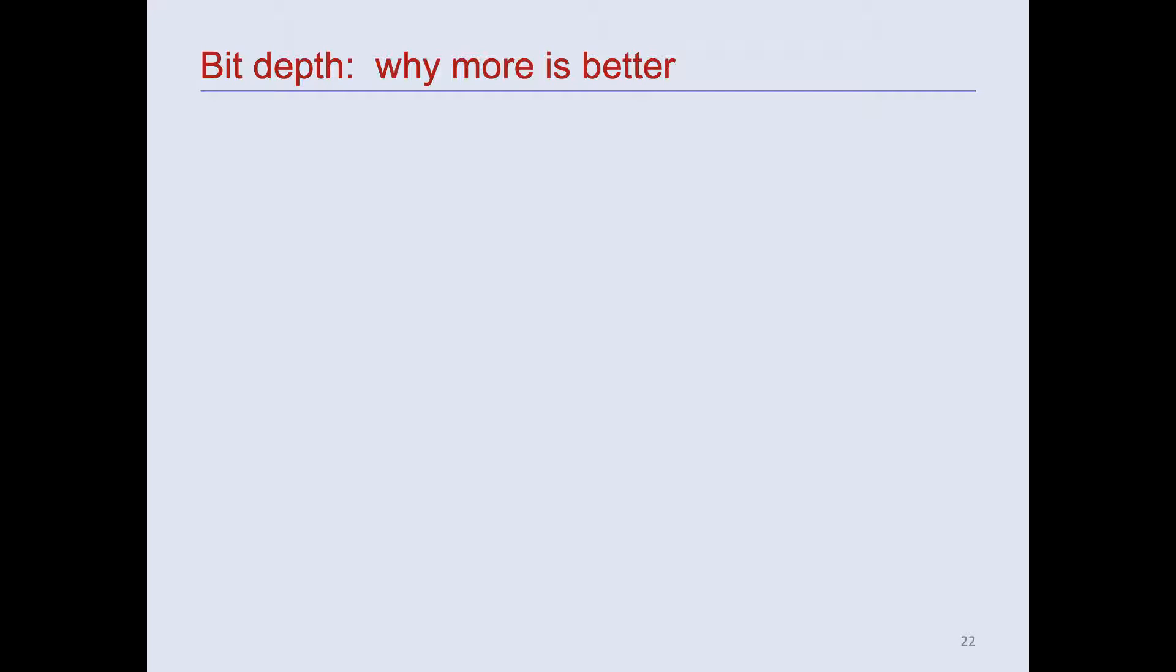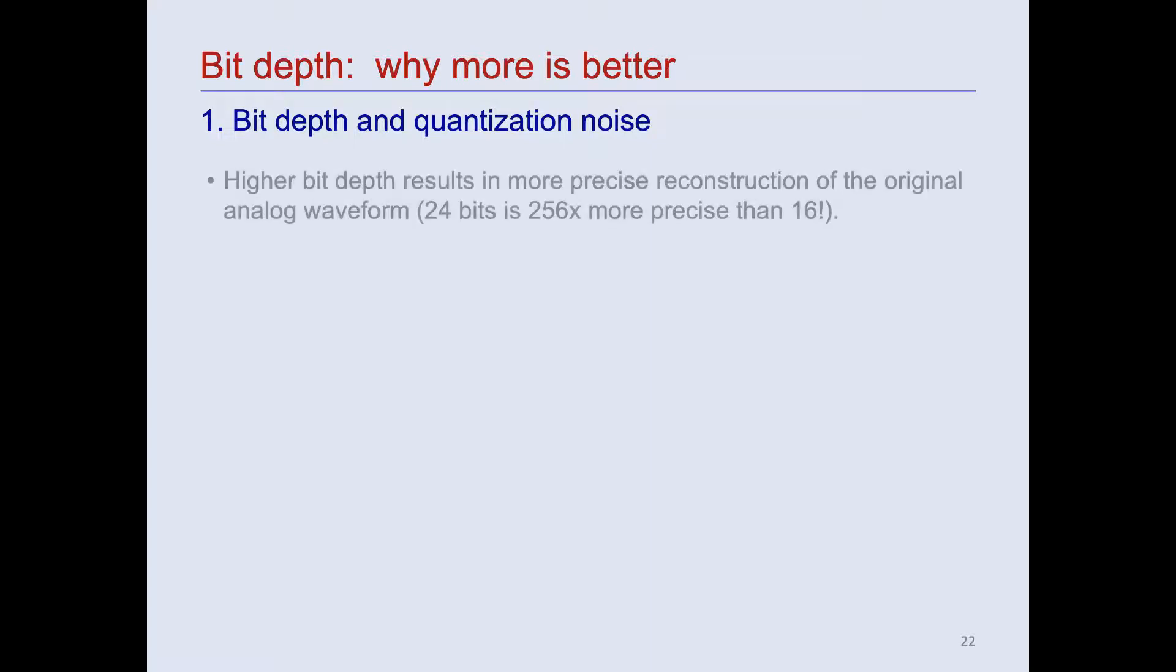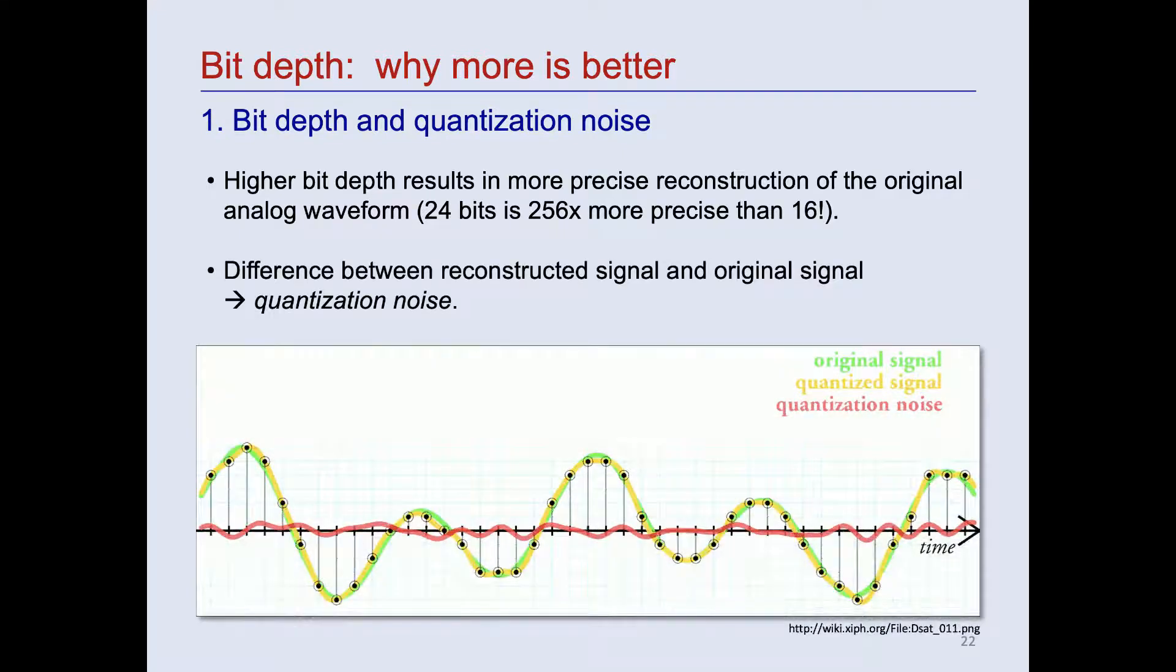There are two main reasons why higher bit depth may be preferable in digital audio recordings, and one reason why it may not. The first reason to prefer higher bit depth is related to a phenomenon called quantization noise. Higher bit depth always results in more precise reconstruction of the original analog waveform. So, for example, 24 bits is 256 times more precise than 16 bits. The difference between the signal that's reconstructed from the digital samples and the original signal results in a phenomenon called quantization noise, which manifests in the playback as a low-level hiss. In the early days of digital audio recording, you could buy an inexpensive 8-bit recording device that you could plug into your computer, and this created recordings in which that hiss of quantization noise was faintly audible. Today, the lowest bit depth available in modern audio recorders is usually 16 bits, which results in quantization noise that is typically too faint to be audible.